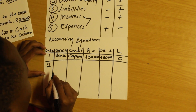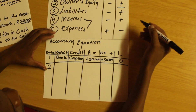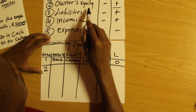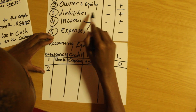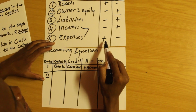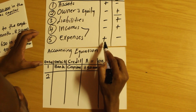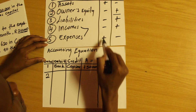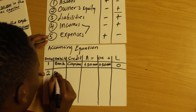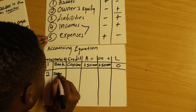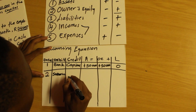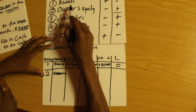Salaries is an expense, and expenses decrease the owner's equity. Whenever an account decreases the owner's equity, we debit it. Salaries is an expense, so we debit it. You can see these rules correspond — we're going to debit salaries.